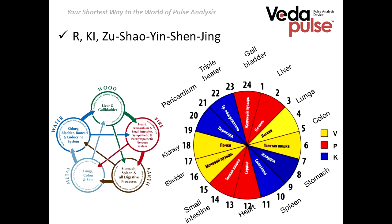Let's remember our Wu-Xing system. According to it, the kidney channel is connected to the water element, and in that element, belonging to the water category, it's like double Yin — Yin within Yin. According to VetaPulse concepts, the kidney channel belongs to the water category, and its activity time is between 5 PM and 7 PM. It's the border when we accumulate fluids and our kidneys are ready to excrete all fluids on the physical level.